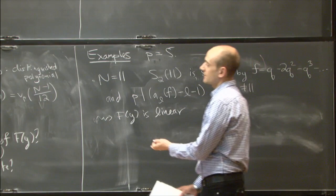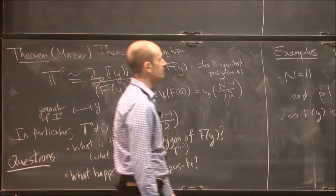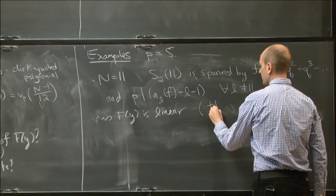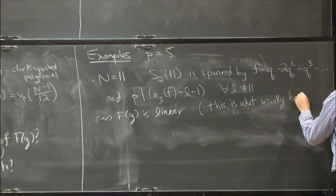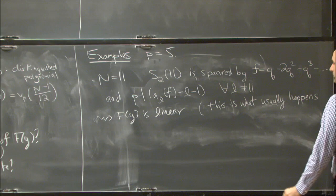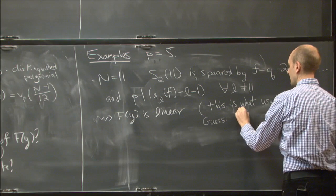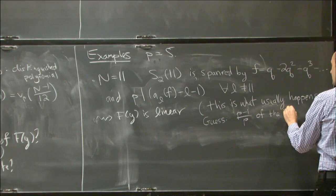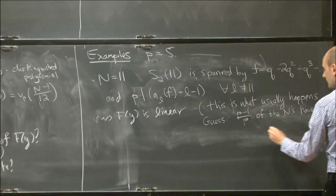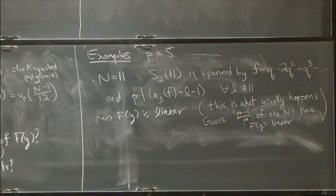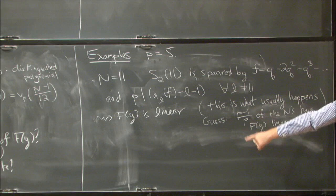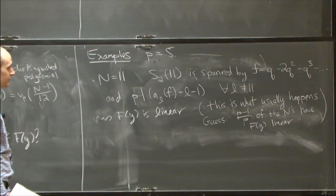The fact that there is one form and that p divides these coefficients is saying, in terms of F, that F is linear. In other words, since this is a linear polynomial, T_0 is isomorphic to Z_p in this case. This is what usually happens — based on a bunch of computations, if you choose a random prime N that's 1 mod p, I would guess that F is linear (p minus 1) over p of the time.